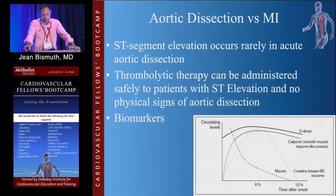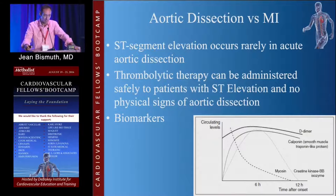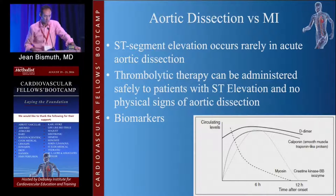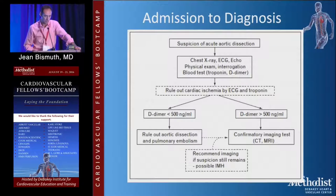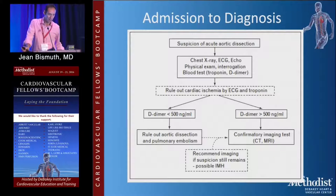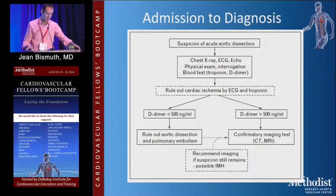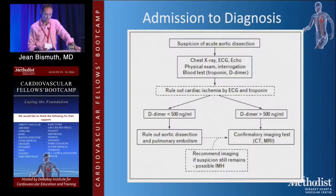One thing you need to figure out is whether it's an aortic dissection or an MI. There are biomarkers that help — a D-dimer less than 500 can rule out aortic dissection and pulmonary embolism. If it's higher, you probably need a confirmatory test. Most of us don't routinely do this, but it's a pretty good screening tool.